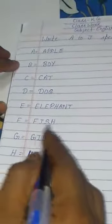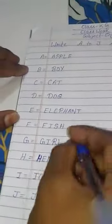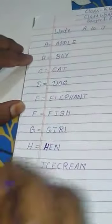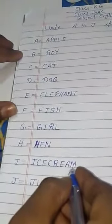Boy, boy means larka. Cat, cat means billy. Dog, dog means kutta. Elephant, elephant means hati. Fish, fish means musli. Girl, girl means larki. Hen, hen means murgi. Ice cream, ice cream means ice cream.